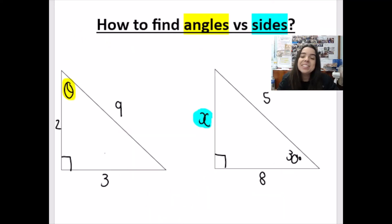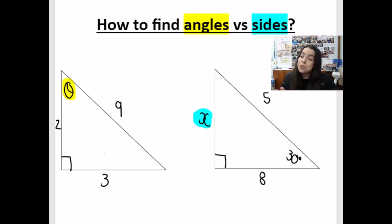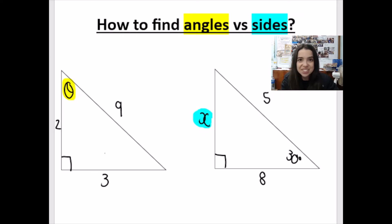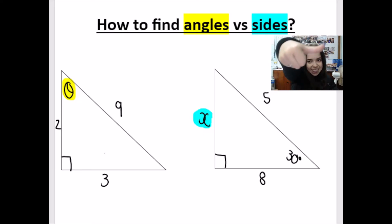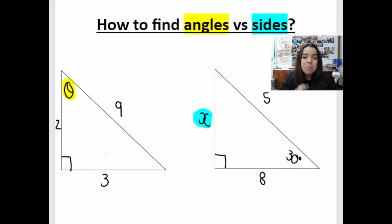If you liked this video and you'd like to see how to find sides versus angles in a right angle triangle using trig ratios, let me know in the comments below. Let me know what else you want to see. Don't forget to give this video a big thumbs up and subscribe to my channel for more maths and science videos. Bye everyone!